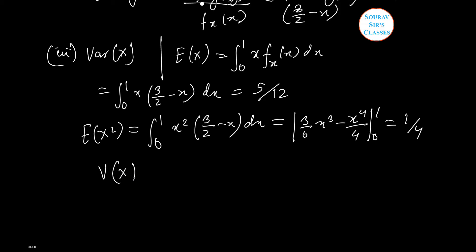Therefore variance of x is equals to expectation x square minus expectation x whole square, which is equals to 1 by 4 minus 25 by 144 or 11 by 144. Similarly for vy we can get by the similar process 1 by 144.